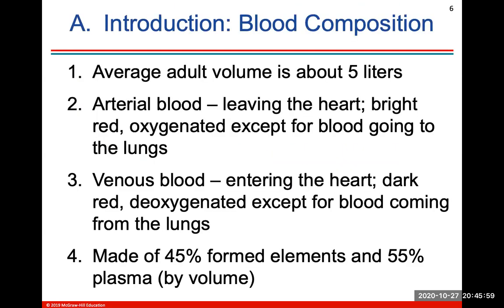The average adult volume contains about five liters of blood. Arterial blood leaves the heart — it's bright red and oxygenated, except for blood going to your lungs. Venous blood enters the heart and is darker red, not blue — it's deoxygenated, except for blood coming from the lungs.